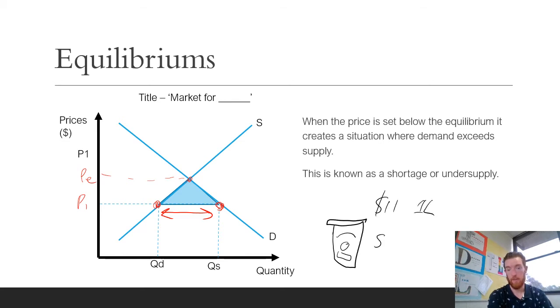But occasionally they go on special for half price, either five dollars or five fifty. When that happens the stock just disappears because that price is below the equilibrium price. People could be happy paying seven or eleven, but when it's set below that it creates a situation where a shortage is occurring.